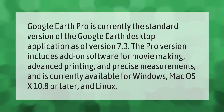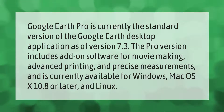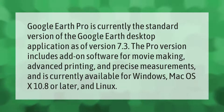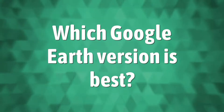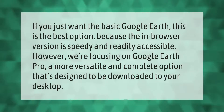Google Earth Pro is currently the standard version of the Google Earth desktop application. As of version 7.3, the Pro version includes add-on software for movie making, advanced printing, and precise measurements, and is currently available for Windows, Mac OS 10.8 or later, and Linux.